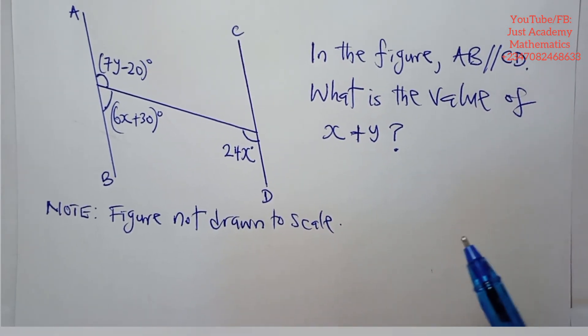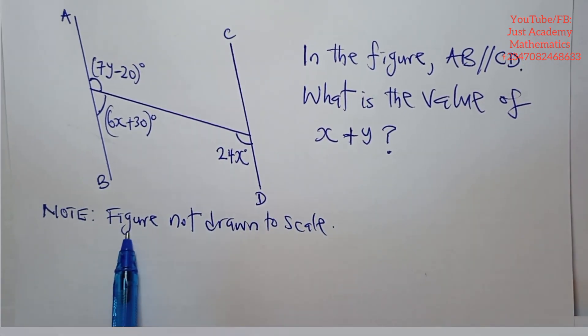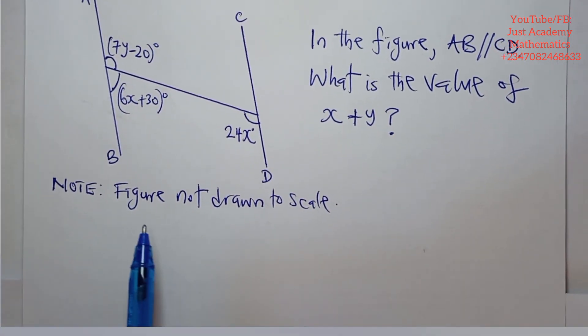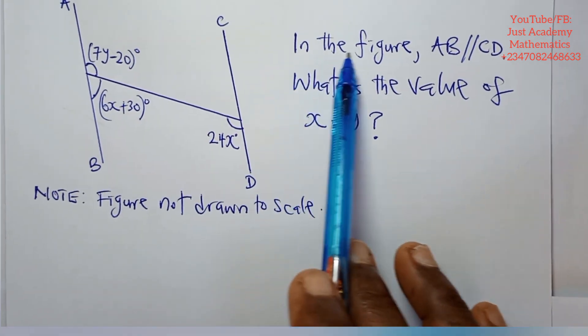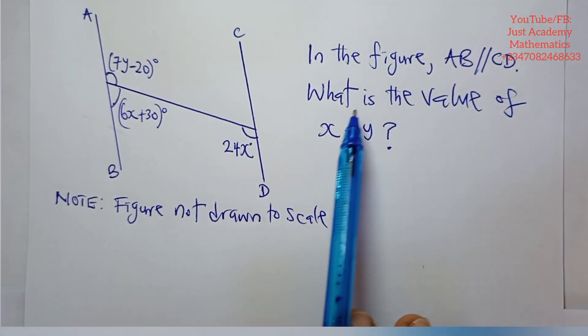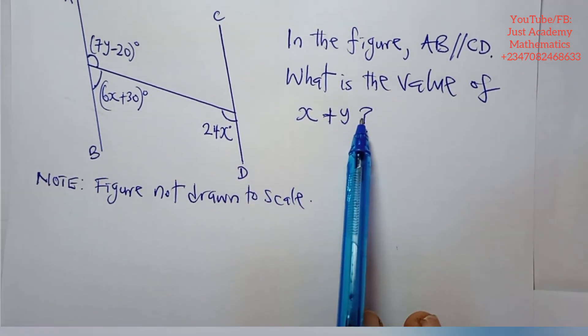Let's see the possibilities we have. But before then, note that the figure is not drawn to scale. So the figure is not precise. Now in the figure, AB is parallel to CD. What is the value of x plus y?